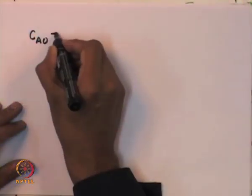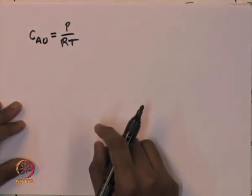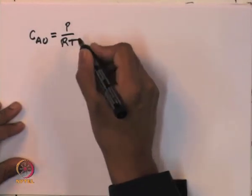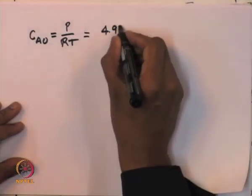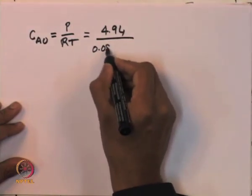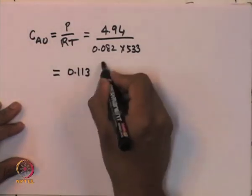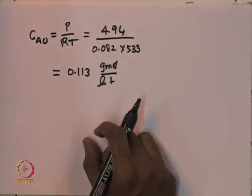The first step is to find out the concentration with which the fluid is flowing into the reactor. C_A0, the inlet concentration, is equal to P/RT — the pressure divided by the gas constant multiplied by the inlet temperature. That gives 4.94 divided by 0.082 times 533, which comes out to be about 0.113 gram moles per liter.